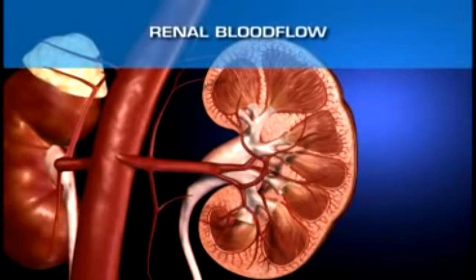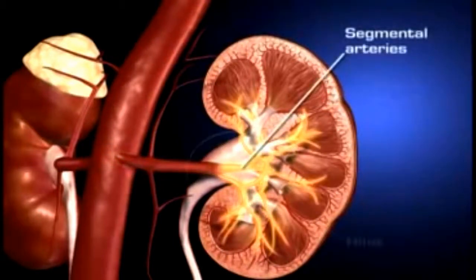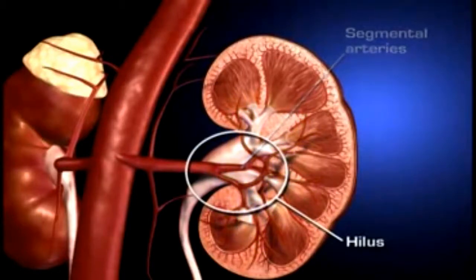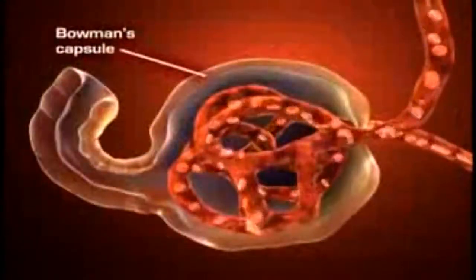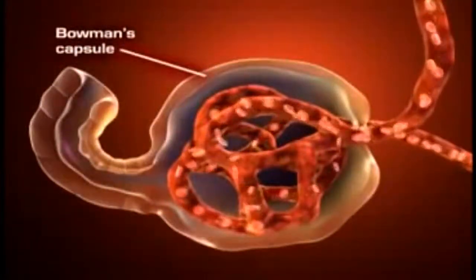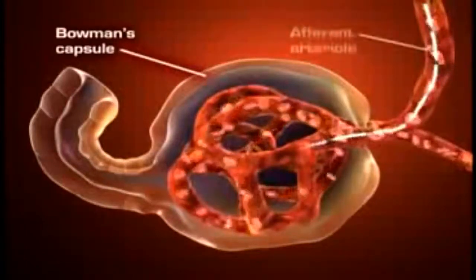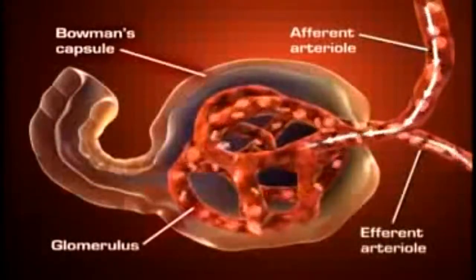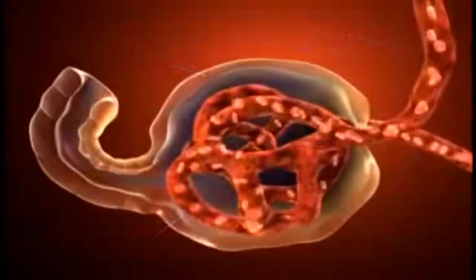Each kidney is supplied with blood by a single renal artery that arises on its respective side of the aorta before dividing into five segmental arteries that enter the hilus. Within the kidney, each segmental artery branches into several lobular arteries. The lobular arteries further subdivide to form interlobular arteries, which branch off into afferent arterioles. Blood flows into the glomeruli through the afferent arterioles and out of the glomerulus through the efferent arterioles. The afferent and efferent arterioles regulate glomerular capillary pressure by selectively dilating or constricting.